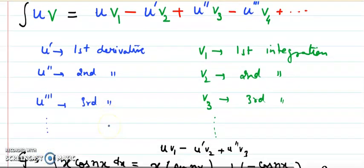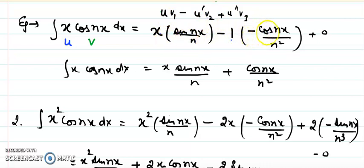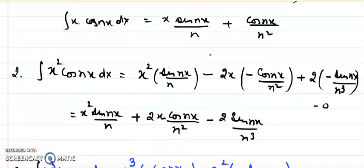Let's take an example with ∫ x cos(nx) dx. Here u = x and v = cos(nx). First integration of cos(nx) is sin(nx)/n, differentiation of x is 1, and second integration of sin(nx)/n is −cos(nx)/n². Since the derivative of 1 is zero, there are only two terms. Keep the integration terms inside brackets to avoid sign mistakes, since sine and cosine alternate between negative and positive.